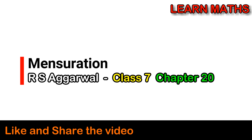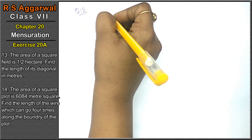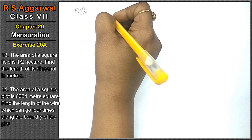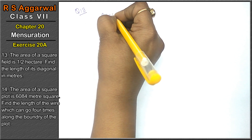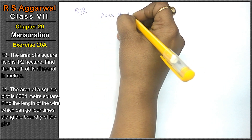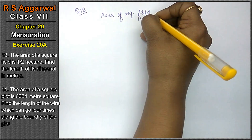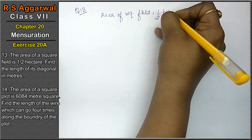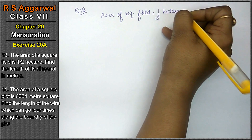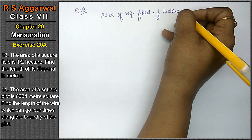Let's do question number 13 of exercise 28, that is Mensuration. Question number 13: the area of a square field equals 1/2 hectare. Find the length of the diagonal.